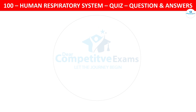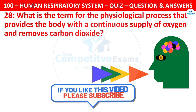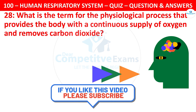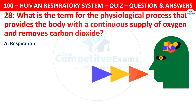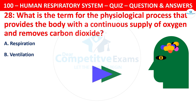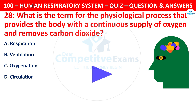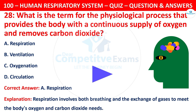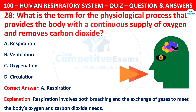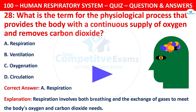Question 28: What is the term for the physiological process that provides the body with a continuous supply of oxygen and removes carbon dioxide? Your options are: respiration, ventilation, oxygenation, or circulation. The correct answer is A — respiration. Respiration involves both breathing and exchange of gases to meet the body's oxygen and carbon dioxide needs.